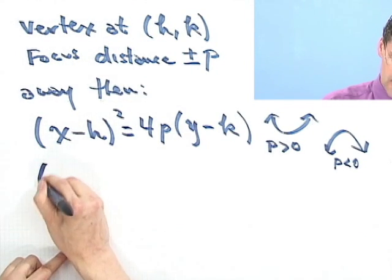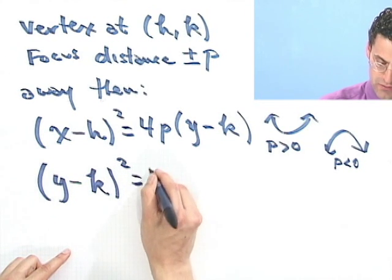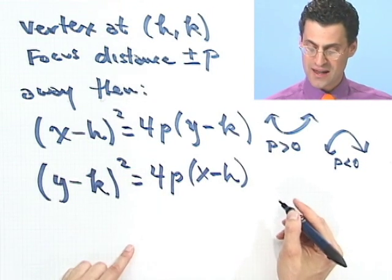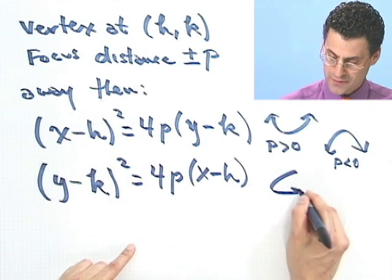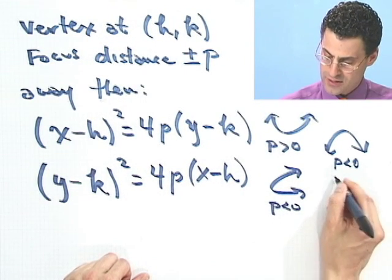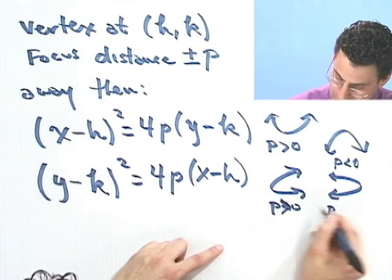Or the other possibility is that you have (y minus k) squared equals 4p(x minus h), in which case then you have either an opening parabola this way if p is positive, or a parabola opens this way if p is negative.